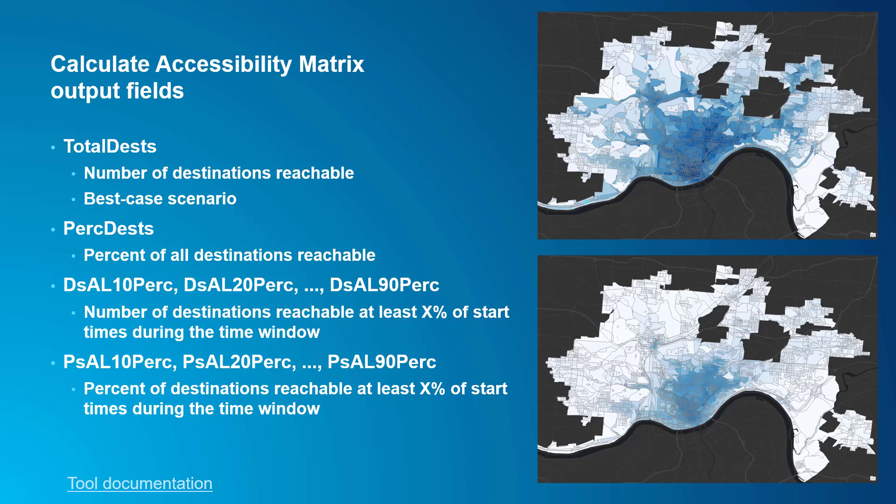Let me explain a different way. Let's say I ran the tool over a 1-hour time window — there are 60 start times, so the OD cost matrix was calculated 60 times. In order for a traveler starting at origin 1 to reach destination A, they have to take a bus that doesn't run very often. For some start times the bus is convenient and they can get to destination A within the time limit; at other start times the wait is too long. So sometimes destination A shows up as reachable and sometimes it doesn't — let's say it shows up as reachable 65% of the time. That means this destination will be counted in DSAL 60-perk but not in DSAL 70-perk.